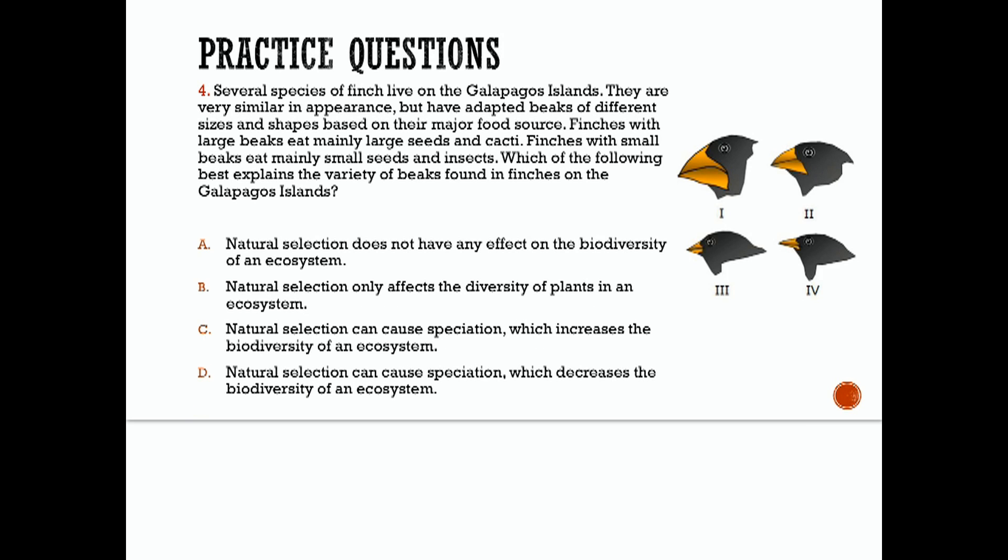Number four, several species of finch live on the Galapagos Islands. They are very similar in appearance, but have adapted beaks of different sizes and shapes based on their major food source. Finches with large beaks eat mainly large seeds and cacti. Finches with small beaks eat mainly small seeds and insects. Which of the following best explains the variety of beaks found in finches on the Galapagos Islands? Pause this, look at your answer choices, and see what you think.